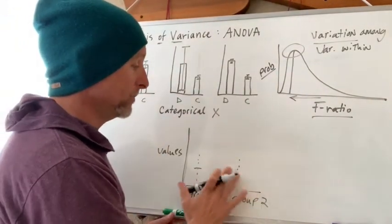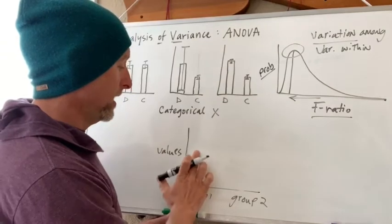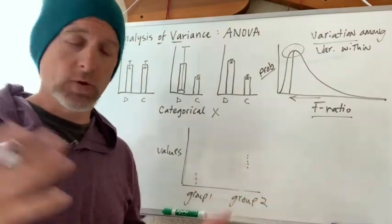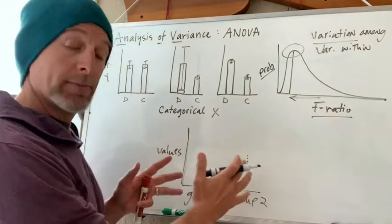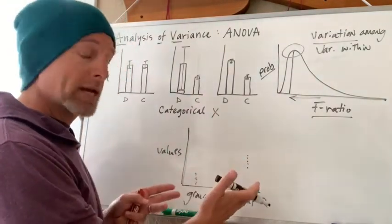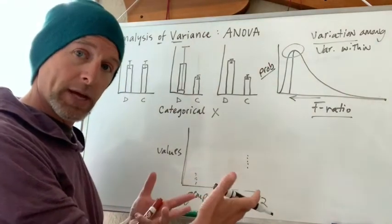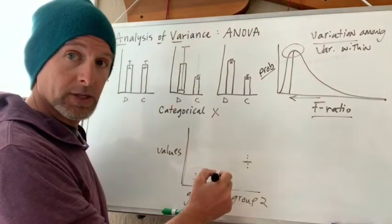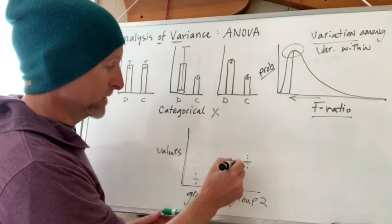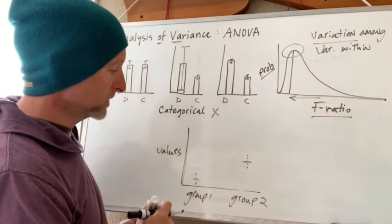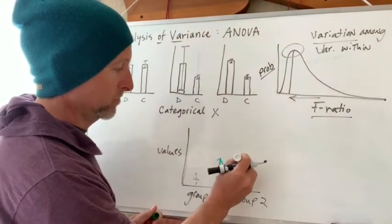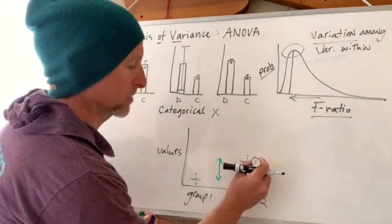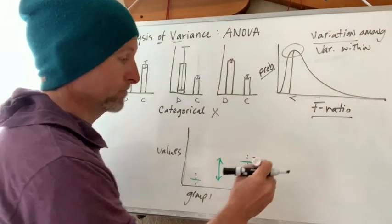Occasionally I may accidentally sample such that all my group one is here, and all my group two is here, but it's random chance. If these are coming from the same population and there's no difference, it would be a random event and pretty rare for me to accidentally sample this way, such that I get a mean here and a mean here, and I have a large between group difference. The difference from this line to this line is relatively large, whereas the variation within here is low.